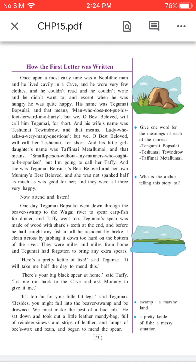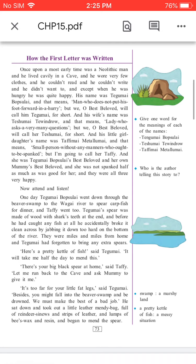From what we have read till now, give one word for the meanings of each of the names: Tegumai Bobsulai, Teshumai Tevindrov, Taffi. Who is the author trying to tell this story to? A meaning of a few words: 'swamp' means a marshy land; 'a pretty kettle of fish' means a messy situation.